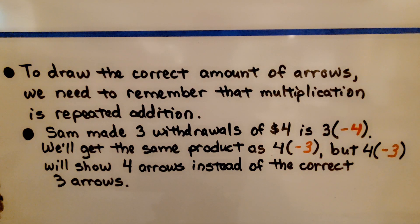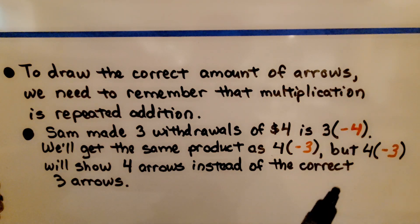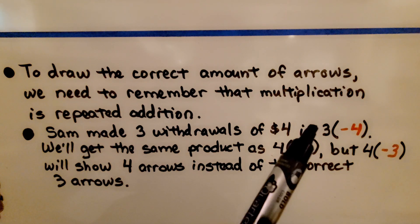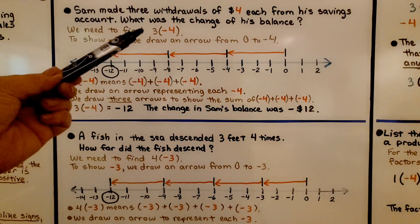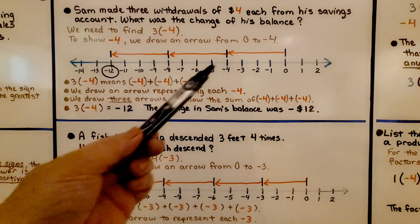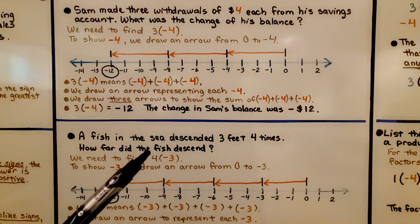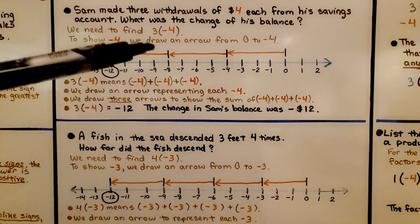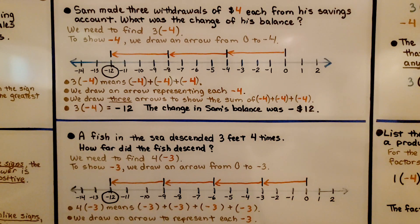To draw the correct number of arrows, we need to remember that multiplication is repeated addition. Sam made three withdrawals of four dollars, which is three times negative four — we'll get the same product as four times negative three, but four times negative three will show four arrows, while three times negative four shows three arrows. We can see our problem has the multiplier on the outside of the parentheses. They both equal negative twelve, but they're drawn differently.